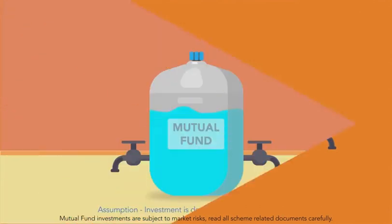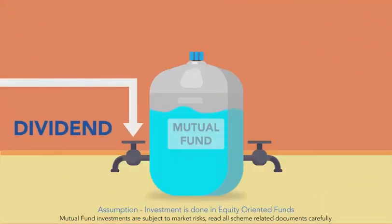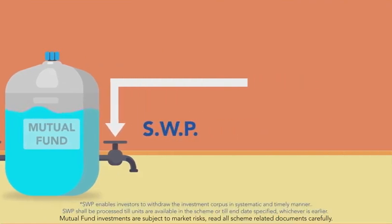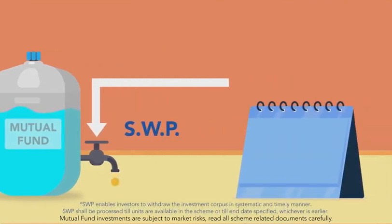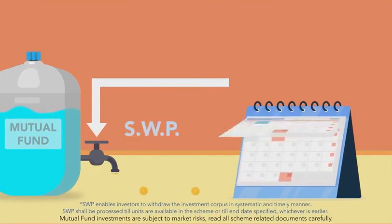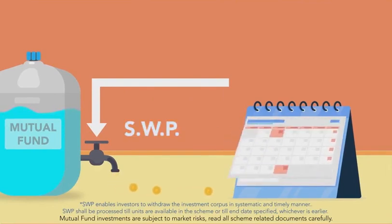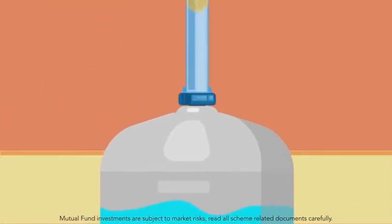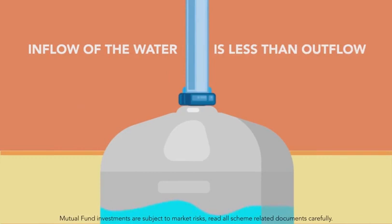The left tap is the dividend option plan, and the right tap is the Systematic Withdrawal Plan (SWP). If you want to withdraw a fixed amount every month, SWP is the best option for you. Whenever water inflow decreases, the water level will go down because inflow of water is less than outflow.